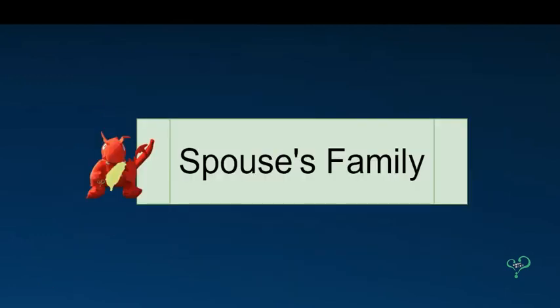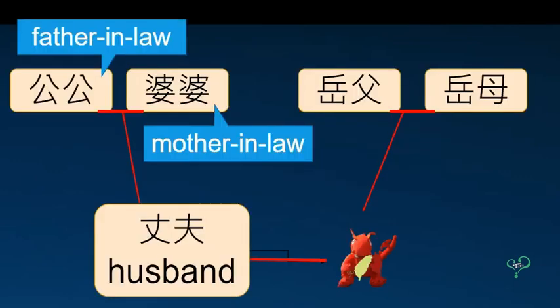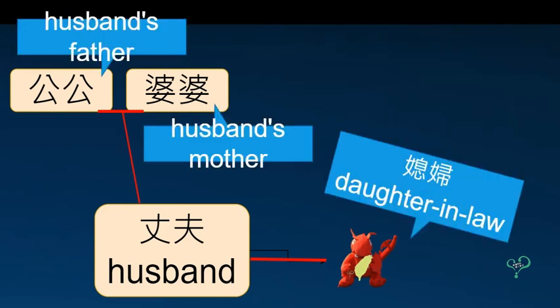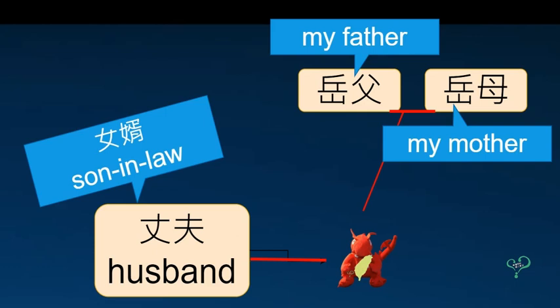Lastly, my spouse's family. When I am talking about my husband's parents, I call them 公婆. My husband's father is 公公, and my husband's mother is 婆婆. My husband calls my father 岳父 and my mother his 岳母. To my 公婆, I am their 媳婦. And to my parents, my husband is their 女婿. I hope I made myself clear.